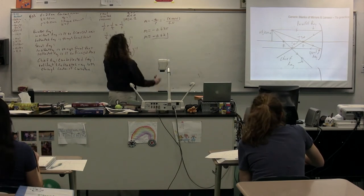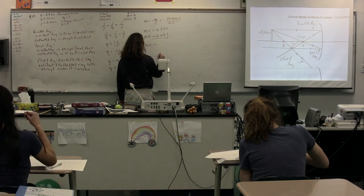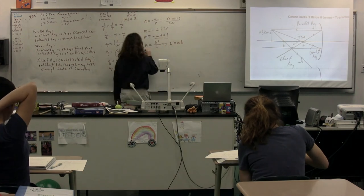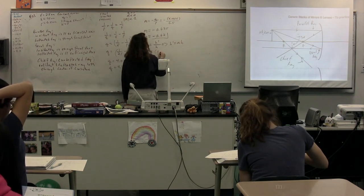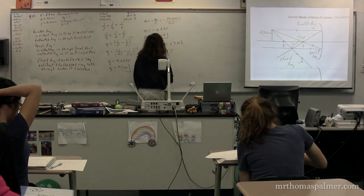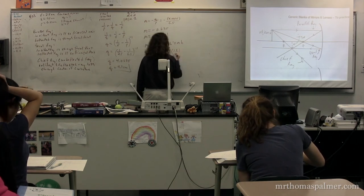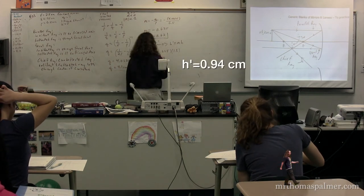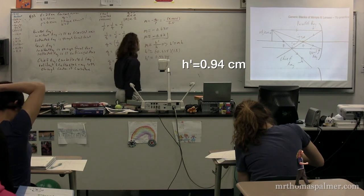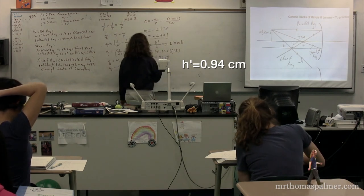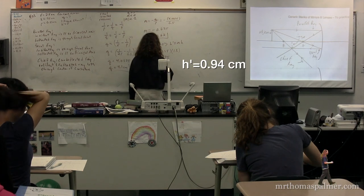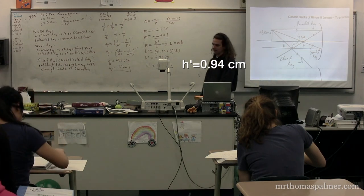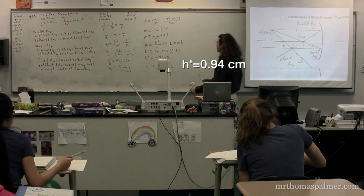We can figure out the image height because magnification equals the image height over the object height. Therefore, the image height equals magnification multiplied by the object height: negative 0.625 multiplied by the object height, which was 1.5 centimeters. The image height is 0.9375, so the image height equals negative 0.94 centimeters. If you measure it on the diagram it will work out to be approximately just less than 1.0. We should actually use the negative for the image height.